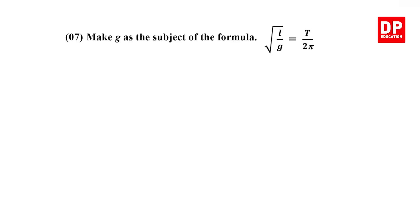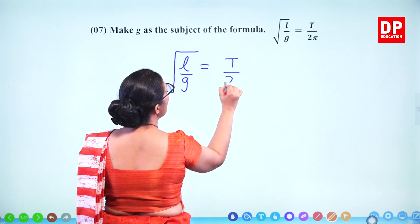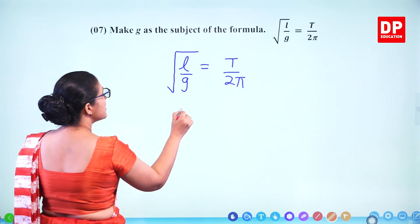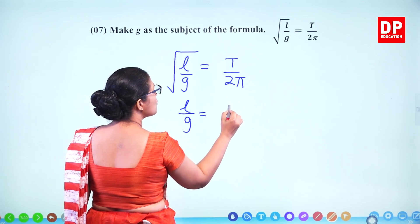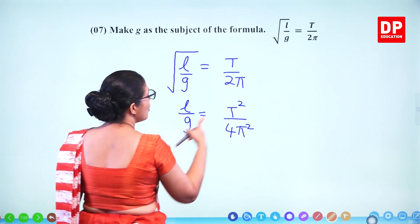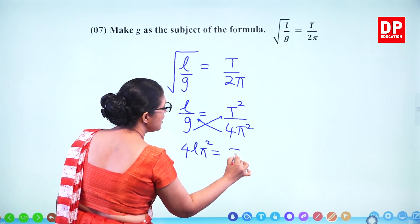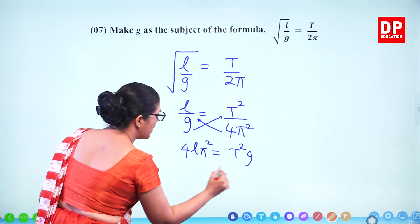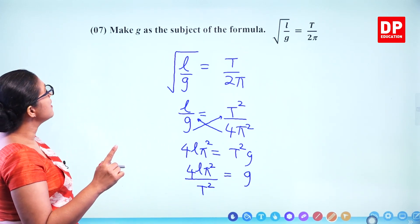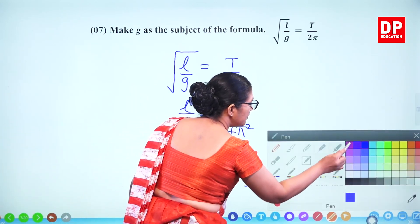Question number 7. Make G the subject of the formula: square root of L over G equals T over 2π. Square both sides to get L over G equals T squared over 4π squared. Cross multiply to get 4Lπ squared equals T squared G. Therefore G equals 4Lπ squared over T squared. That's the subject of the formula. Two marks.